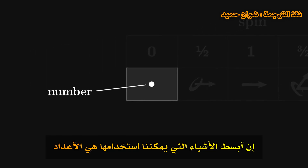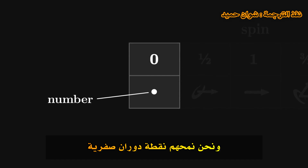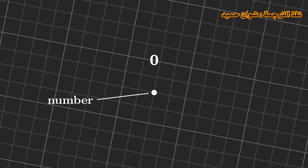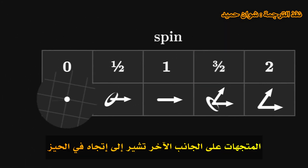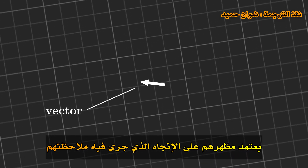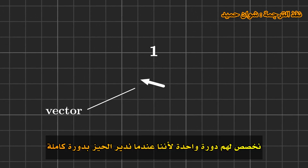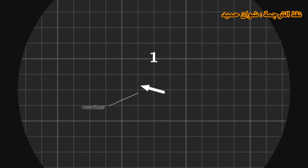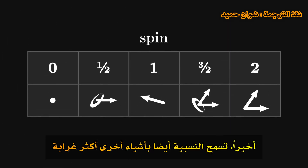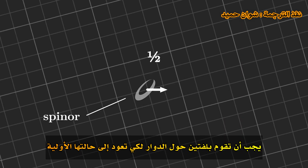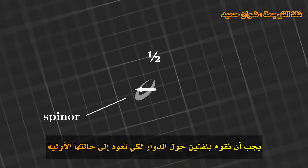The simplest objects that we can use are numbers. We give them spin zero, because when we rotate space around a number, it does not vary. Vectors, on the other hand, indicate a direction in space. Their appearance depends on the orientation in which they are observed. We assign them spin one, because when we rotate space by a full turn, a vector also describes a full turn. Finally, relativity also allows other more exotic objects, and in particular spinors, which have spin one half. You have to make two turns around a spinor for it to come back to its initial state.